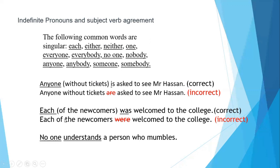Another example: 'Each of the newcomers was welcomed to the college.' This is correct. Writing 'were welcomed' would be incorrect because 'each' is an indefinite pronoun and is always used as a singular subject, so the verb must be singular. Similarly: 'No one understands a person who mumbles.' Here 'no one' is the subject — an indefinite pronoun — and 'understands' is the singular verb used with it.